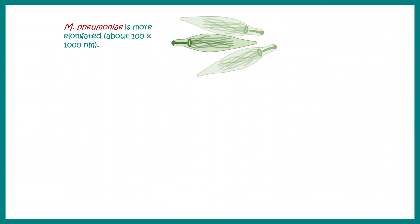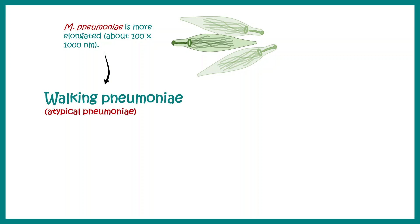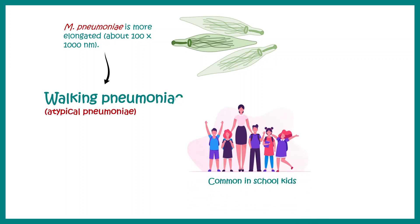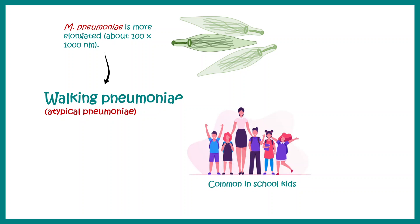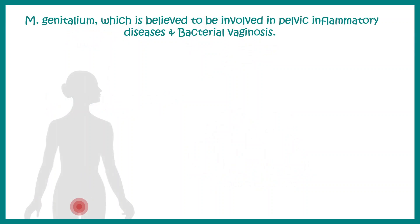The nickname of mycoplasma is pleuro-pneumonia-like organism because they are involved in pneumonia. M. pneumoniae is responsible for walking pneumonia, which is very common in school kids. It's basically a mild atypical form of pneumonia. Other than that, M. genitalium is believed to be involved with pelvic inflammatory disease and bacterial vaginosis.